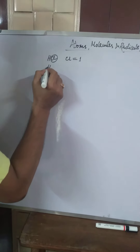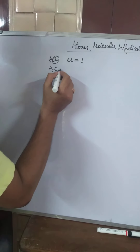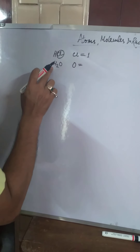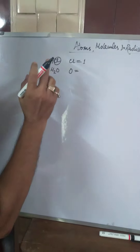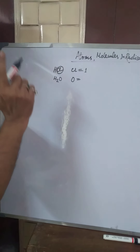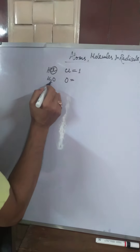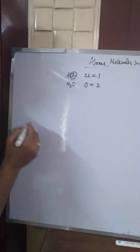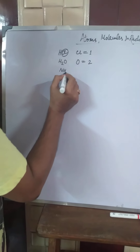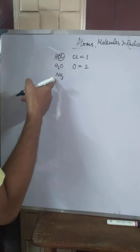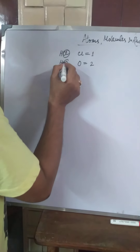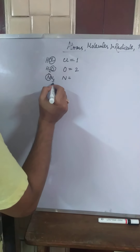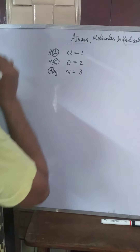Take another example — water, H2O. Here you see that one oxygen atom combines with two hydrogen atoms. How many hydrogen atoms are attached here with one oxygen atom? Two. So the valency of oxygen is two. This is the formula of ammonia, NH3. One nitrogen atom is attached with three hydrogen atoms. So the valency of nitrogen is three.